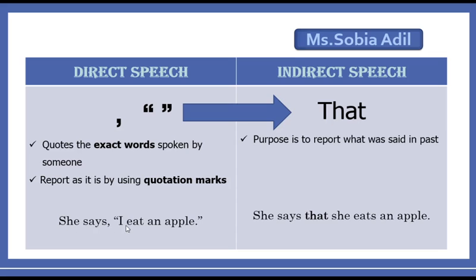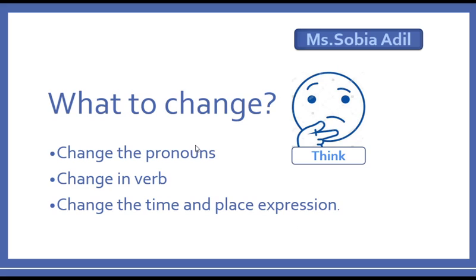For example: 'She says, I eat an apple.' This is the direct speech — these are the same exact words uttered by the girl, so we use quotation marks. When we change this to indirect speech, we remove the quotation marks and write 'that' after the reporting speech. There are three things we have to change: first, change the pronouns; second, change the verbs; and third, change the time and place expressions.